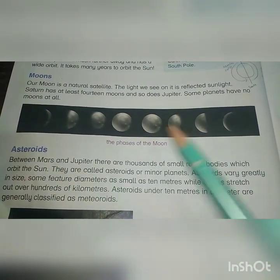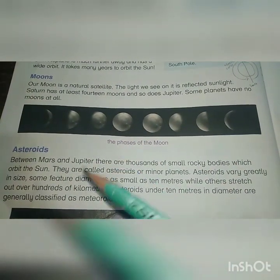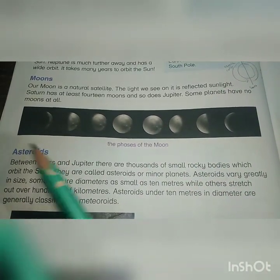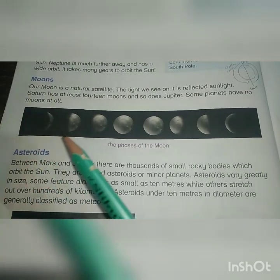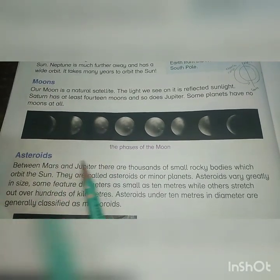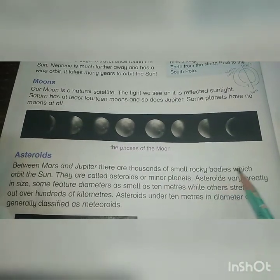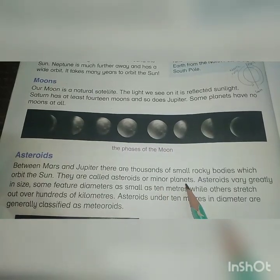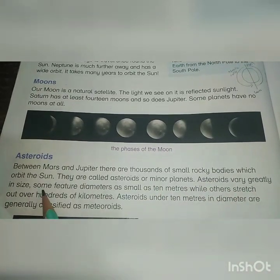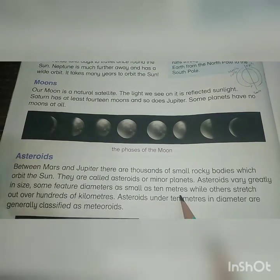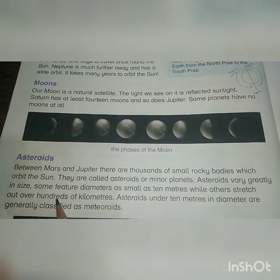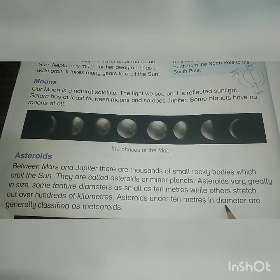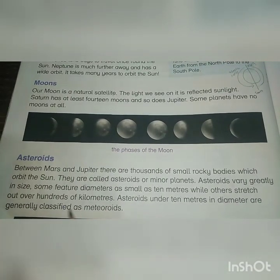Between Mars and Jupiter there are thousands of small rocky bodies which orbit the sun; they are called asteroids or minor planets. Asteroids vary greatly in size — some feature diameters as small as 10 meters while others stretch out over hundreds of kilometers. Asteroids under 10 meters in diameter are generally classified as meteoroids.